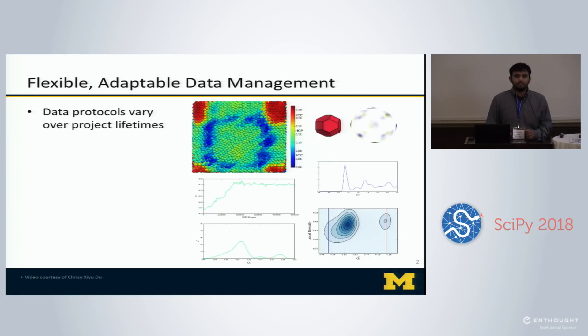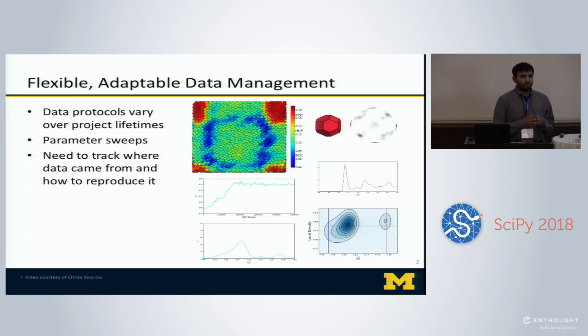The important thing we realized as we were trying to systematically grapple with this issue is that this is pretty common. Anyone who's doing any sort of parameter sweep is going to deal with something like this. For example, those of you using machine learning methods are probably doing hyperparameter optimization where you have to test with a number of different parameters.